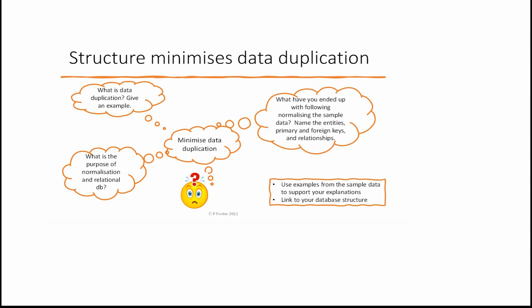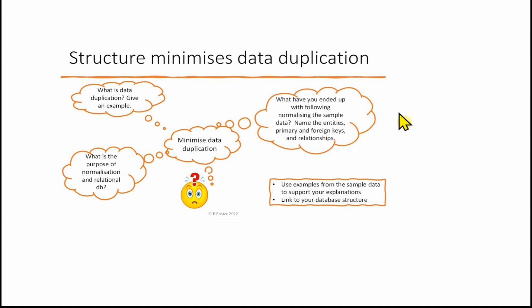It's a good idea to break this evaluation up into two main parts. The first part is the structure minimises data duplication. I've done a little image here to clarify thoughts and structure your answer — it's a lot easier to break things down into smaller parts than to deal with the whole thing at once. There are three main parts to this: what is data duplication with an example from your database, what is the purpose of normalisation and relational databases, and what you've ended up with following normalisation — naming the entities, primary and foreign keys, and relationships — always supported by examples from the sample data.